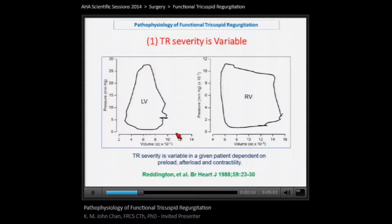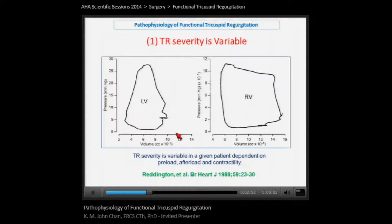There are a few things about the pathophysiology of functional TR which we need to understand in order to manage these patients optimally and to plan surgery. The first thing to appreciate is that the severity of tricuspid regurgitation is variable because of the elasticity of the right ventricle. In a given patient, when assessed under different physiological conditions — depending on preload, afterload, and contractility — you may see different severities of tricuspid regurgitation.